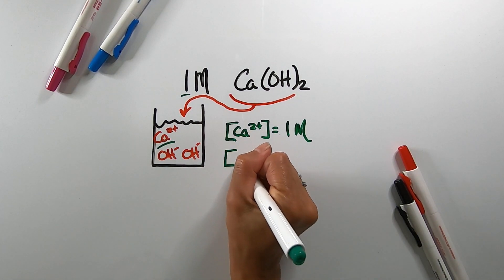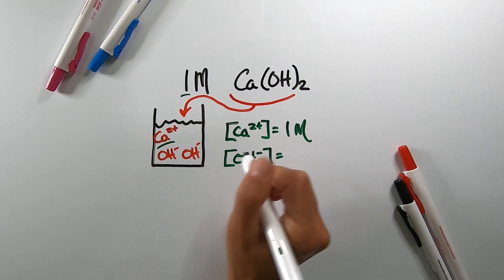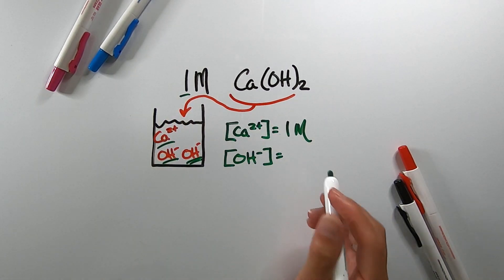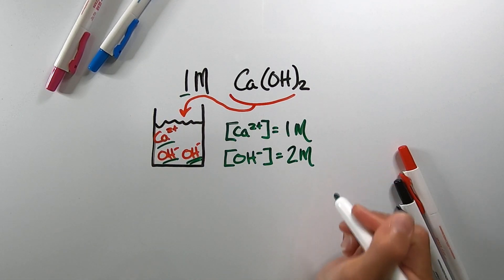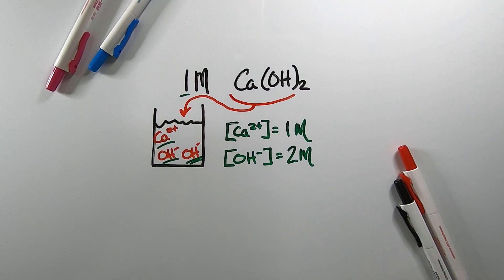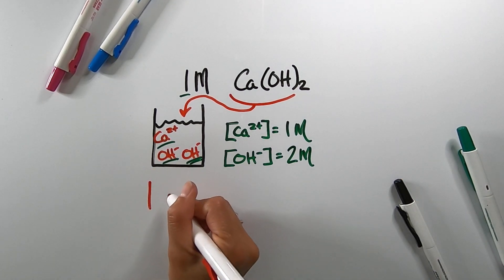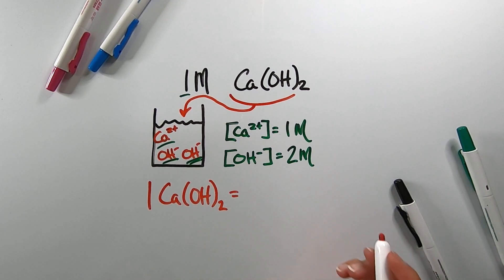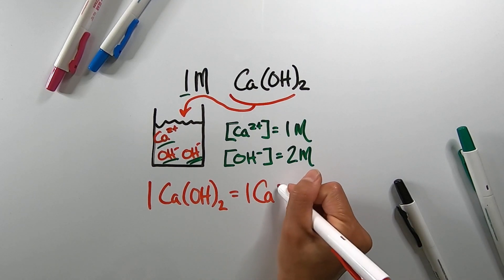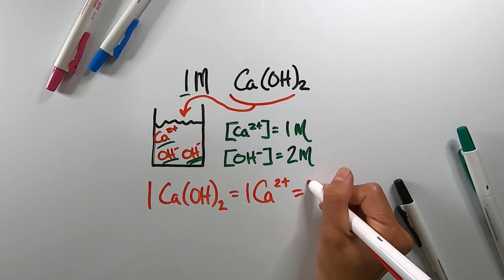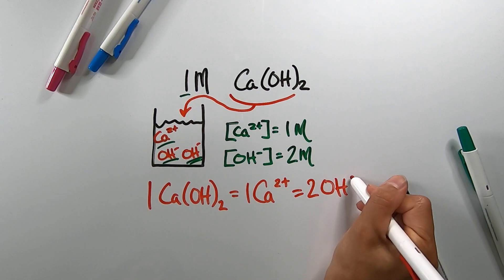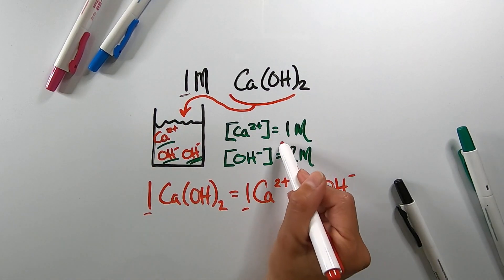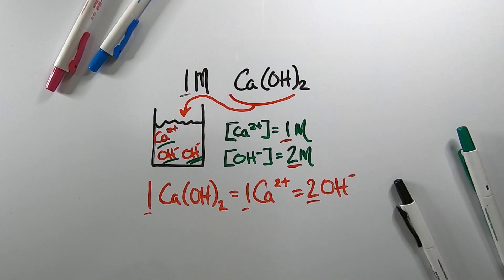If I were asked for the hydroxide ion concentration, I have two hydroxide ions times one molar solution, which is two molar concentration of hydroxide ion in solution. For every one calcium hydroxide molecule, you will release one calcium ion and two hydroxide ions, which is a 1 to 1 to 2 ratio — a 1 to 1 to 2 molar concentration ratio.